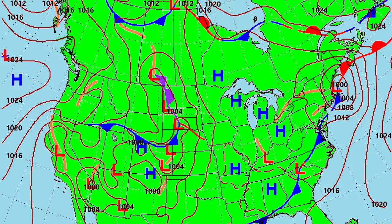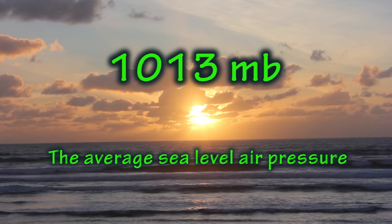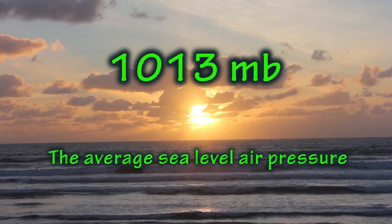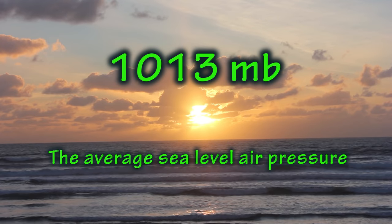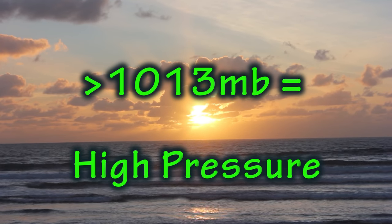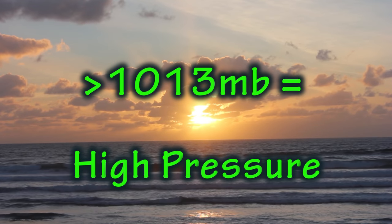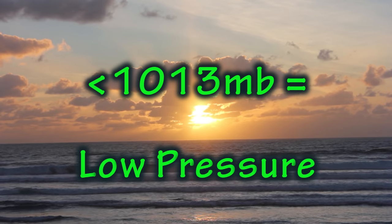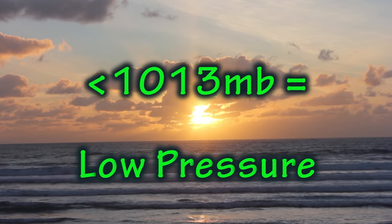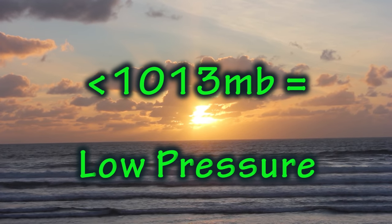On these American weather maps, the isobars are drawn at intervals of four millibars. One thousand and thirteen millibars is the average sea level air pressure. Therefore, areas with an air pressure of over 1013 millibars are considered areas of high pressure, and areas below 1013 millibars are considered areas of low pressure.